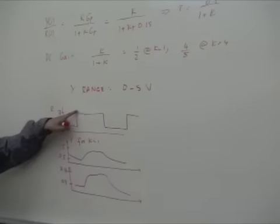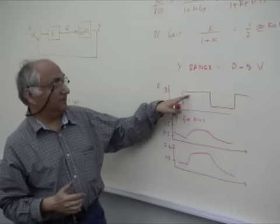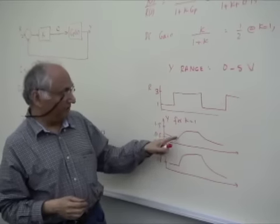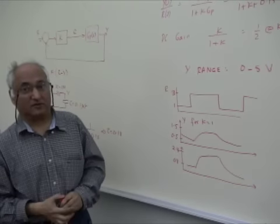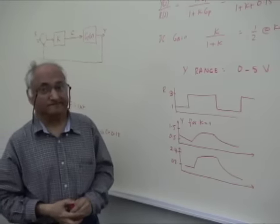So the largest value of C will occur when this transition happens. And as the Y catches up with R then C will decrease. So we'll see a lab demo of all of this in the Digital Control 2 video. Thank you!